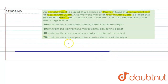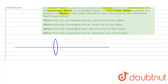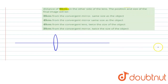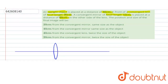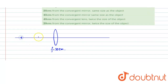So we have a convergent lens, that means a convex lens, of focal length 20 centimeters. In front of the convex lens, at a distance of 40 centimeters — that means at a distance of 2f from the lens — an object AB is placed. This object is placed at a distance of 2f.